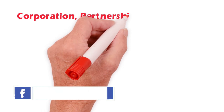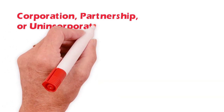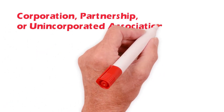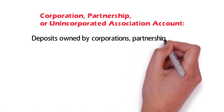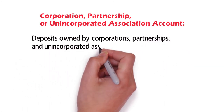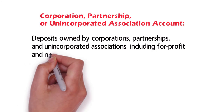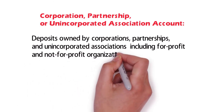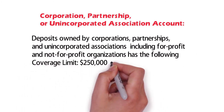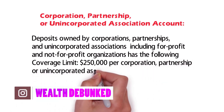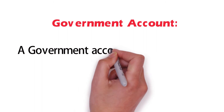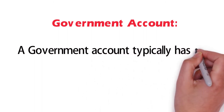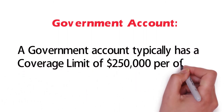A corporation, partnership, or unincorporated association account — deposits owned by corporations, partnerships, and unincorporated associations, including for-profit and not-for-profit organizations — has its own coverage limit. A government account typically has a coverage limit of $250,000 per official custodian.